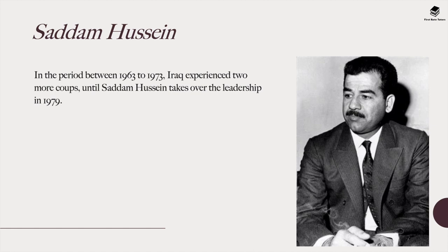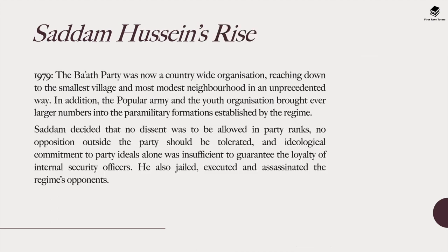In February 1963, Qasim had been assassinated. Saddam Hussein then emerged as a very important political figure in Iraq. In the period between 1963 and 1973, Iraq experienced two coups until Saddam Hussein took over leadership in 1979. By 1979, the Ba'ath party was a country-wide organization reaching down even to the smallest and most remote villages in Iraq.